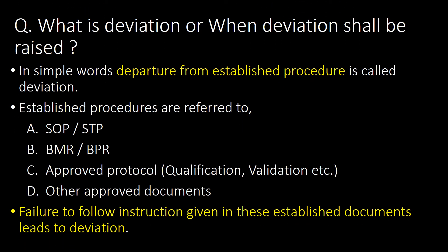What is a deviation, or when should a deviation be raised? In simple words, a departure from an established procedure is called a deviation. Established procedures refer to SOPs, STPs, BMRs, BPRs, approved protocols such as qualification or validation protocols, or any other approved documents. Failure to follow instructions given in these established documents leads to a deviation.